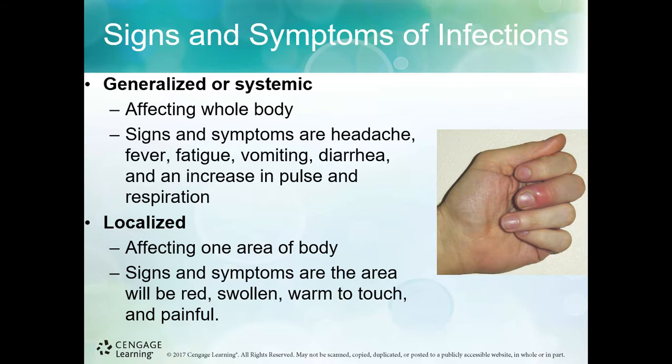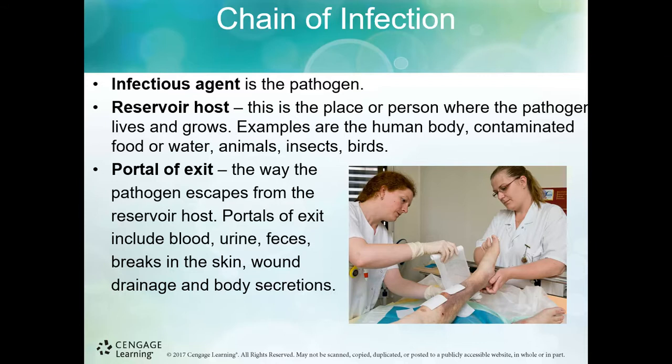When we talk about infection control, we spend a lot of time discussing the chain of infection — what needs to be present in order for an infection to spread. Reading through the links in the chain helps us understand how infections are spread. First, you need the pathogen, which is found in the reservoir host.